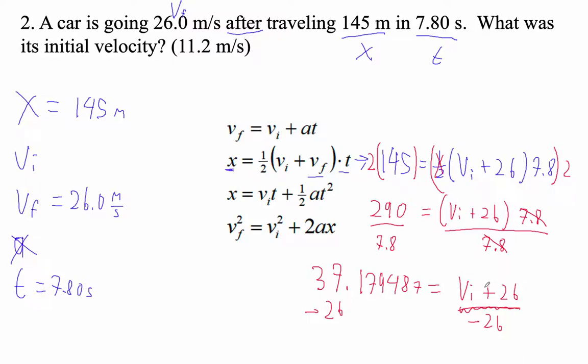When I subtract 26 from this, I get VI just by itself. And when I subtract 26 from 37, I get 11.179.